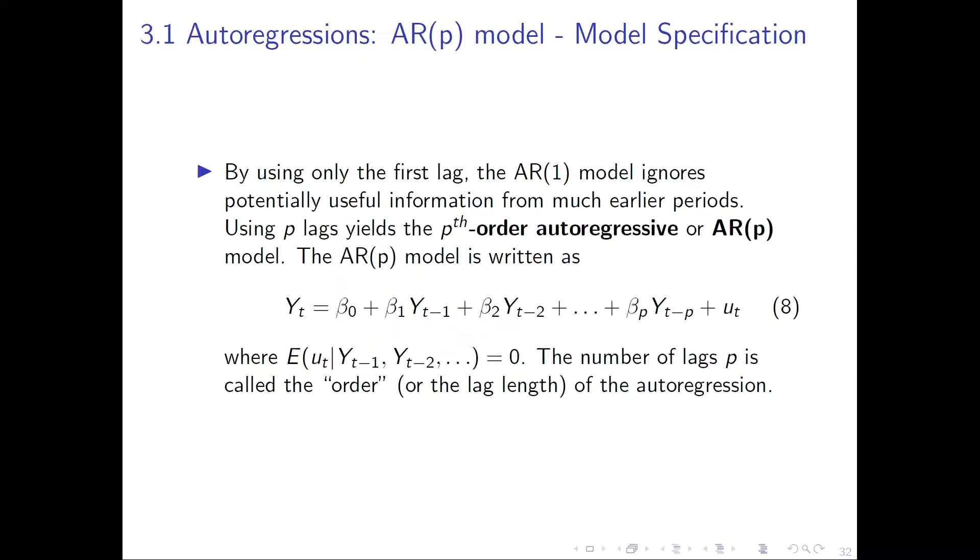Up until now we have talked about the AR(1) model which contains one lag value. But what if you have useful information in lags greater than one?